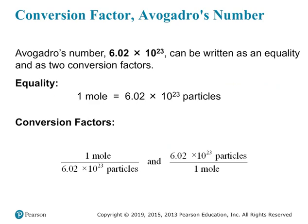Notice that we do have an equality here, so we can turn that equality into conversion factors. We've used the word 'particles,' but you could replace that with whatever you're counting — pencils, cats, or atoms of carbon. We can write this in two different ways: we could put one mole in the numerator and Avogadro's number in the denominator, or Avogadro's number in the numerator and one mole in the denominator. This lets us convert between moles and particles, atoms, or ions.